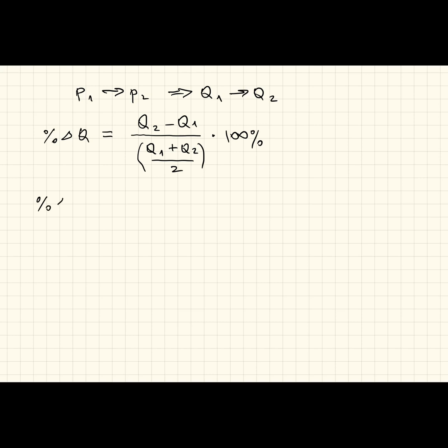For percentage change in price, pretty much the same thing, only now we are using P2 and P1. And again, we divide by the average of these two values. It's neither starting nor ending value, but the average of those two. Which kind of makes this formula foolproof because you don't have to worry about which number comes first, whether it's P2 minus P1 or P1 minus P2.